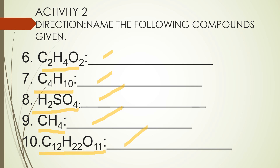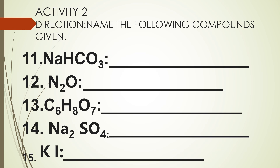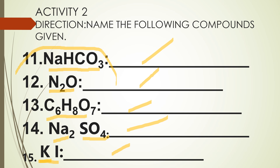Do some research. Number eleven: NaHCO3 — what is the compound name? N2O — what is the compound name? C6H8O7 — what is the compound name? Na2SO4 — what is the compound name? And KI — what is the compound name? Research the names of these compounds.